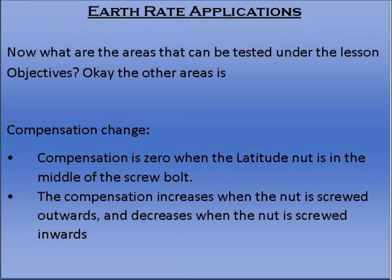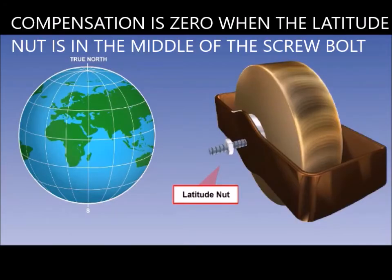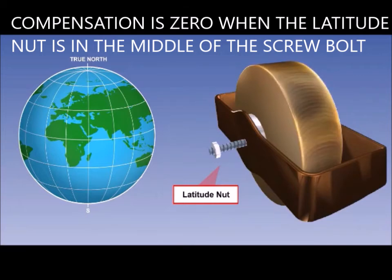Another area is compensation change. Compensation is zero when the latitude nut is in the middle of the screwed bolt. The compensation increases when the nut is screwed outwards and decreases when the nut is screwed inwards. At the equator, the latitude nut is central on the thread as no induced wander is required. As latitude increases north of the equator, the latitude nut is wound out; south of the equator, the latitude nut is wound in — in each case to cause real wander equal and opposite to the apparent wander caused by the earth's rotation.